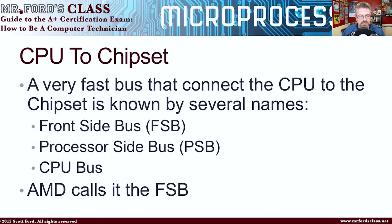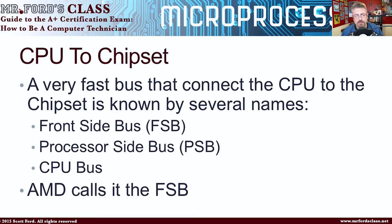We also have a couple of other things to discuss. There's a very fast bus that connects the CPU to the chipset, known by several names — picture this as the Autobahn, the very fast highway. We have the front side bus, the processor side bus, and the CPU bus — all these are the same thing, just different names. If you are an AMD fan, they'll only refer to it as the FSB or the front side bus.